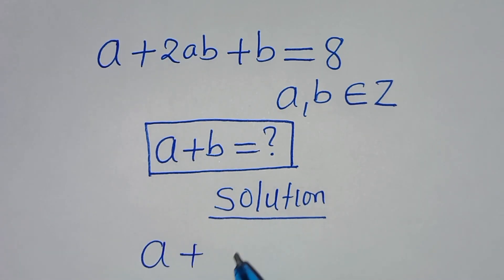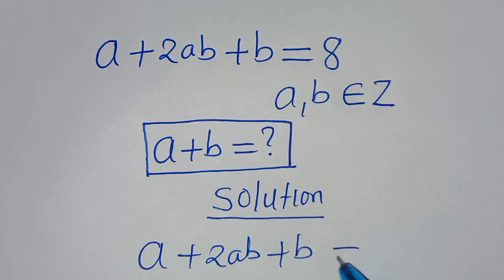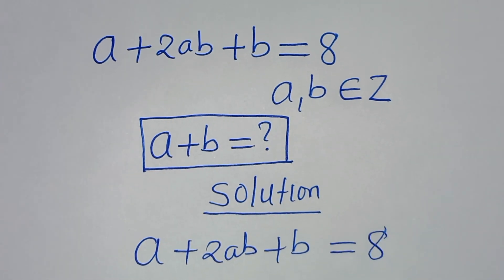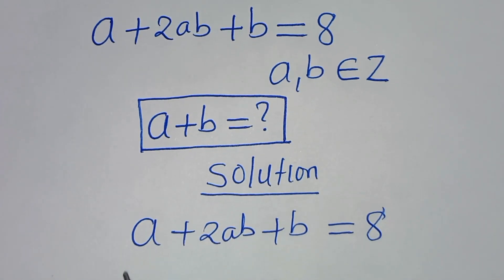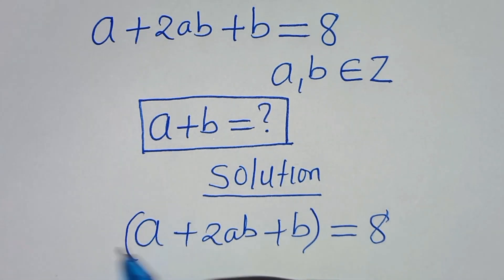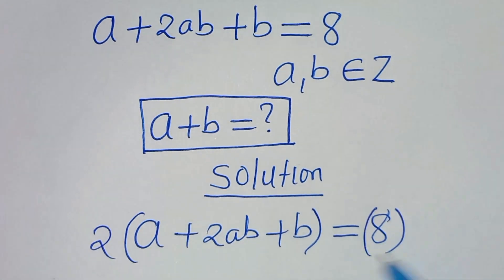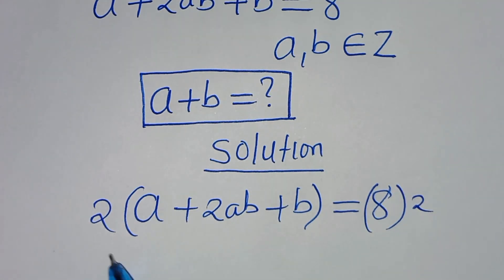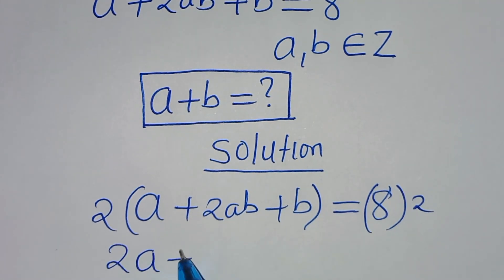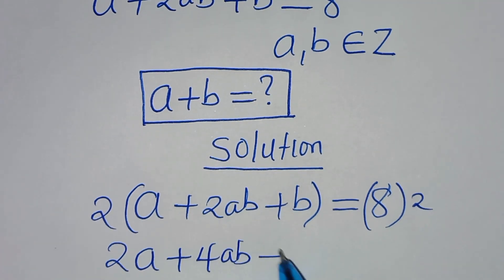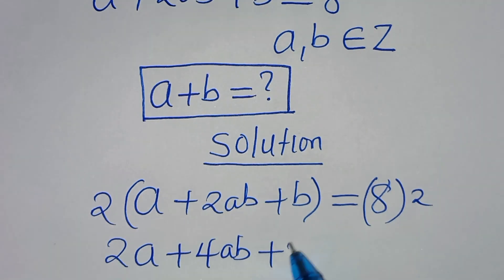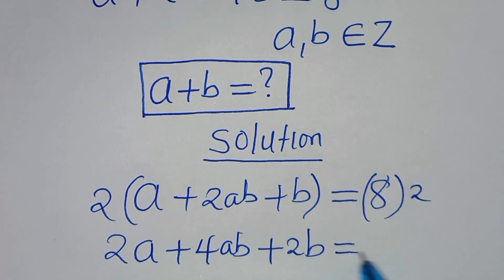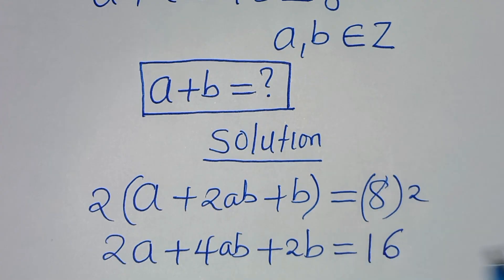So we have a + 2ab + b = 8. The first step is to multiply both sides by 2, so that now we have 2a + 4ab + 2b, and this is equal to 8 times 2, which is equal to 16.